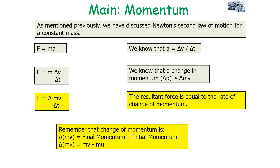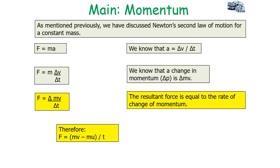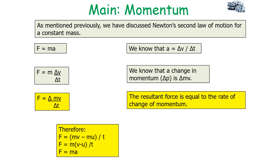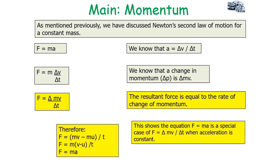The change in momentum Δ(mv) equals final momentum minus initial momentum, or mv − mu. Substituting this: F = (mv − mu)/t = m(v − u)/t. Since (v − u)/t is acceleration, F = ma. This shows that F = ma is a special case of F = Δ(mv)/Δt — the change in momentum over the change in time — when acceleration is constant.